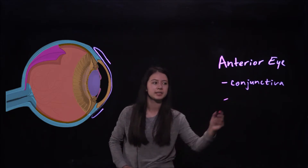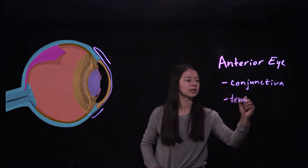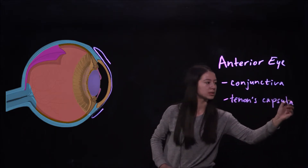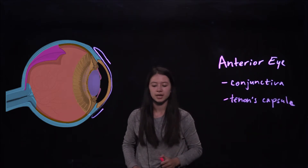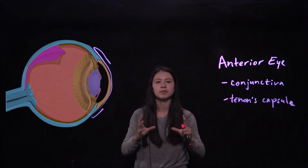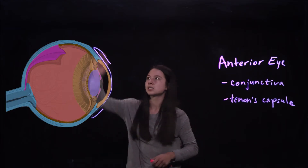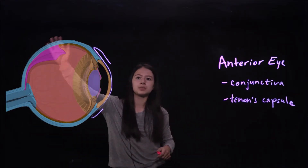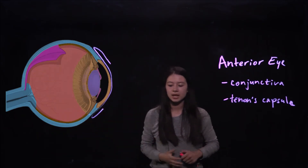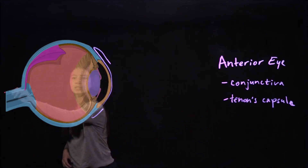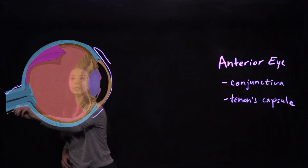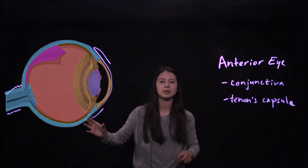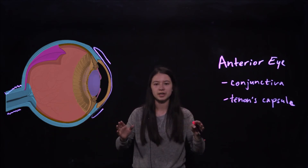Next we're going to look at Tenon's capsule. Tenon's capsule is made of connective tissue and it surrounds the bulb, providing the eye with a socket to move around in. It's located around the outside of the eye. It fuses with the meninges of the optic nerve, and it also forms a sleeve around the muscles that control the movement of the eye.